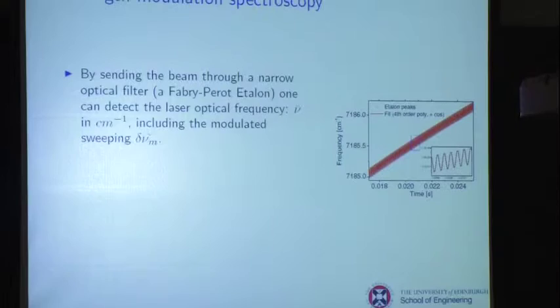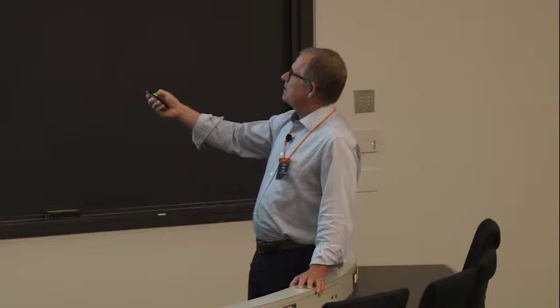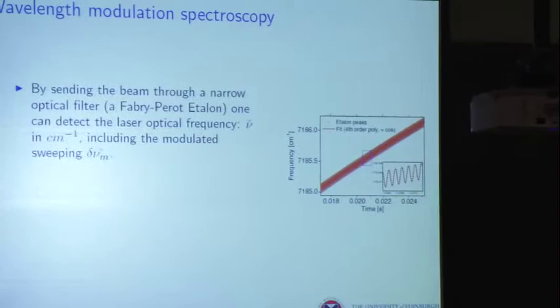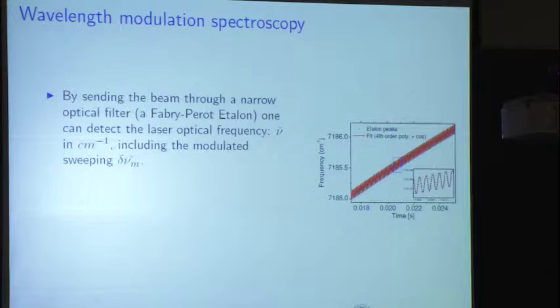If we take that same laser beam and send it through a Fabry-Perot etalon — an extremely narrow bandwidth filter — it will pass light at its resonant orders and reject all other wavelengths. Sending the scanned beam through gives little dots on the detector, each one corresponding to a resonant order of the Fabry-Perot. This is a way to monitor how the wavelength is sweeping with time, and you can see it sweeping quite rapidly and cleanly. This is experimental data.